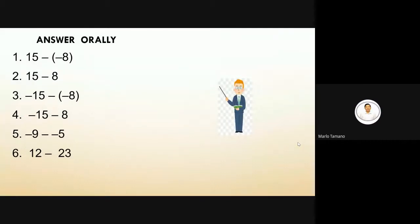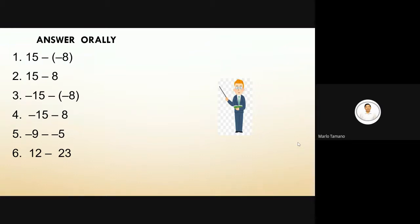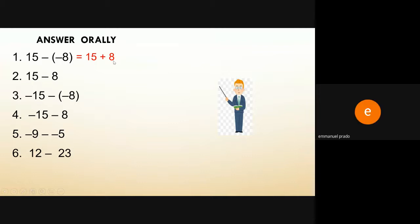Let us do oral practice. Number one: 15 minus negative 8. Change the subtraction to addition and change the sign of the subtrahend from negative to positive. So 15 plus 8 equals 23. Very good!